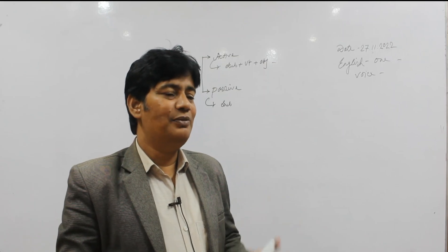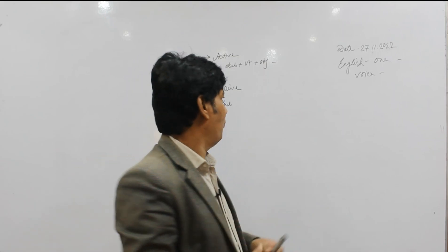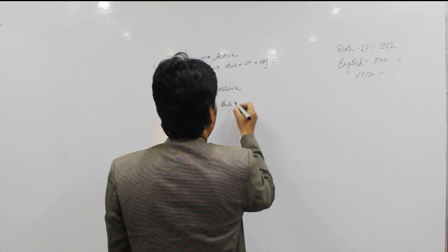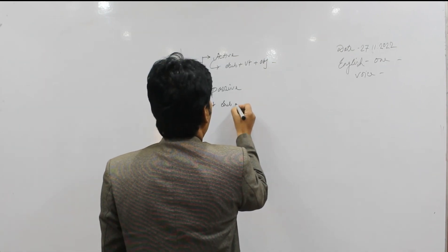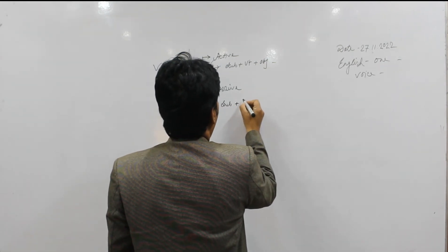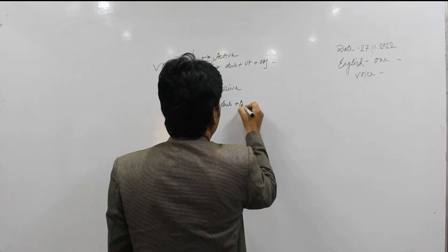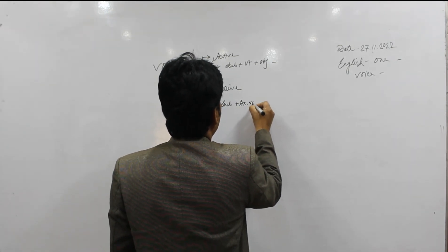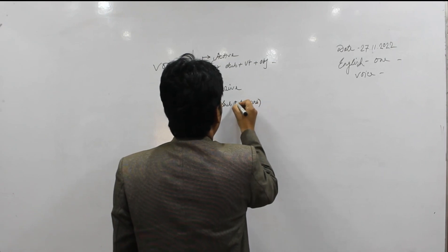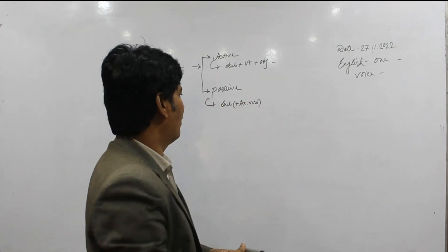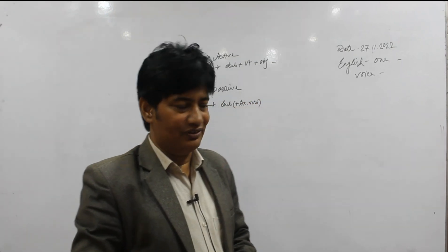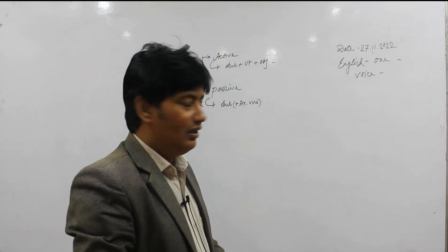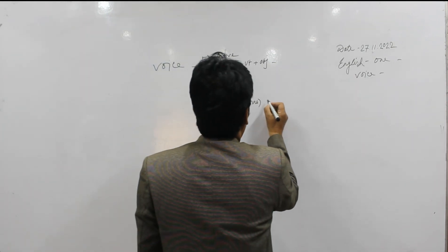Passive voice can be structured like: the object of active voice is placed as the subject of passive voice. Then, if there is no auxiliary verb, a be-verb is placed here — be-verb is mandatory in the passive voice structure.